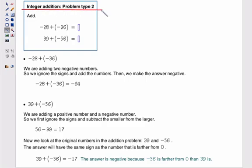Now let's look at integer addition, problem type 2. As usual, problem type 2's are a little bit more challenging than problem type 1. So using a number line for these would be really cumbersome because these are relatively large numbers. So what do we do?